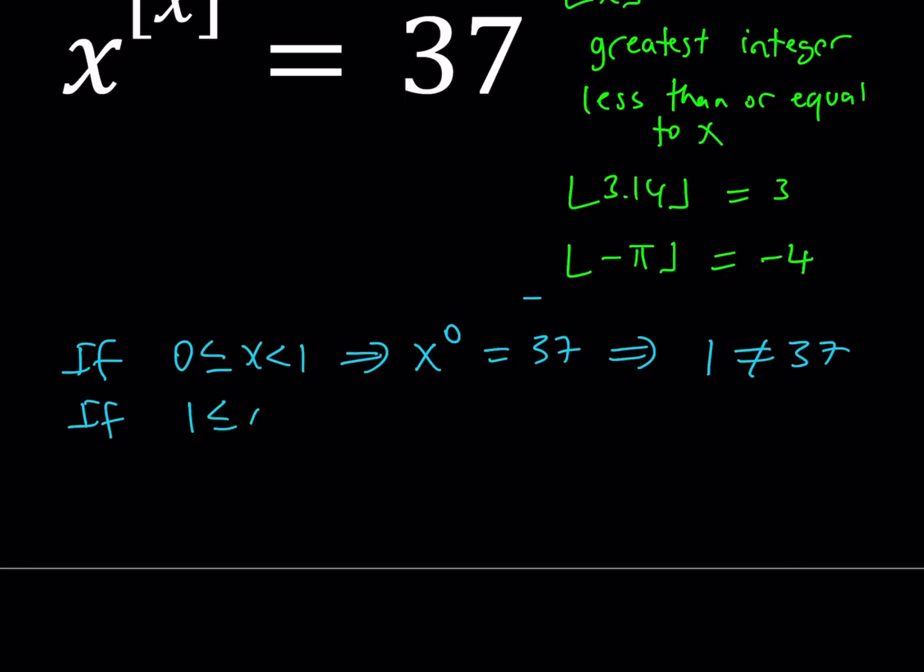If x is between 1 and 2, then the floor value of x is going to be 1. So x to the power of 1 is going to be 37. I'm not going to repeat this every time. Hopefully this will make sense. Obviously, x equals 37 is not going to work because it's not between 1 and 2. So we reject the solution.